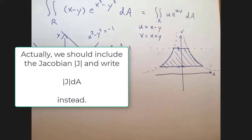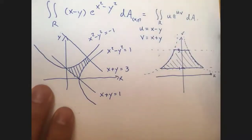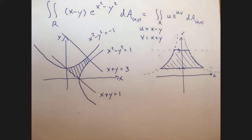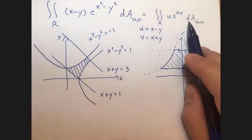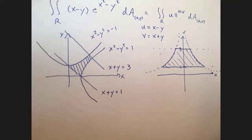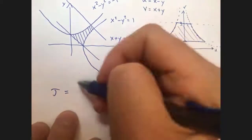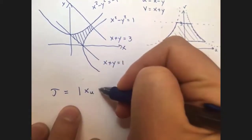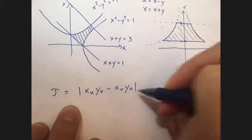So how do we set this all up? We have to account for the fact that dA in xy coordinates and dA in uv coordinates are not the same — there's an adjustment, just like in polar coordinates when we go from dx dy to dr dθ we multiply by r. That adjustment is called the Jacobian. With new variables u and v, the Jacobian is x_u times y_v minus x_v times y_u, and we take the absolute value.